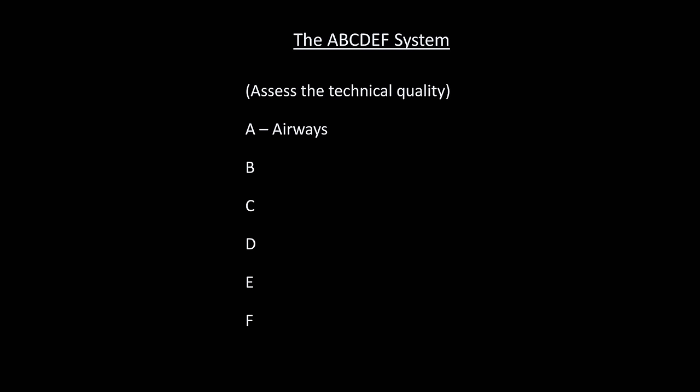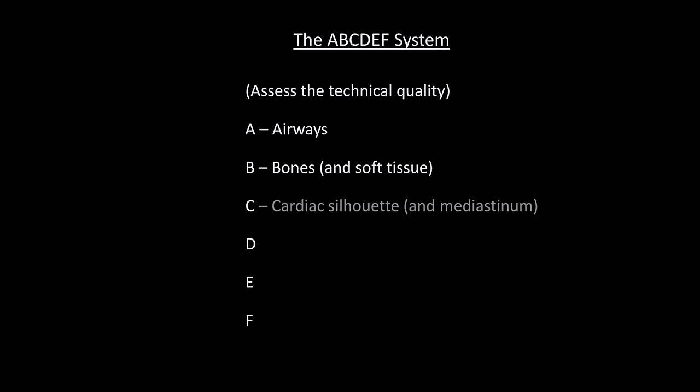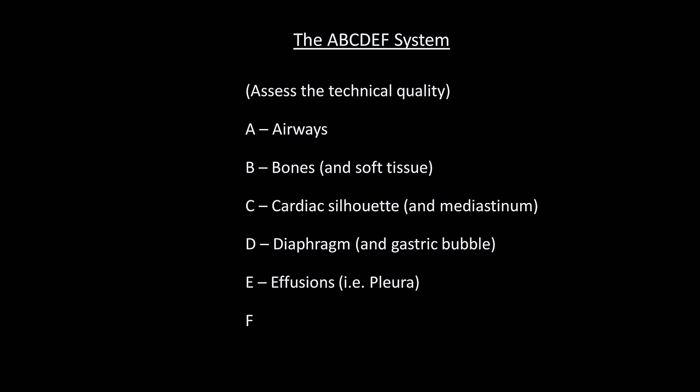Even before the A, we need to assess the technical quality. Then A stands for airways, B for bones and soft tissue, C for the cardiac silhouette and mediastinum, D for diaphragm — which also includes assessment of the gastric air bubble, usually located under the left hemidiaphragm. E for effusions, in other words assessment of the pleura, which includes findings beyond just pleural effusions. And F for fields, that is the lung fields.